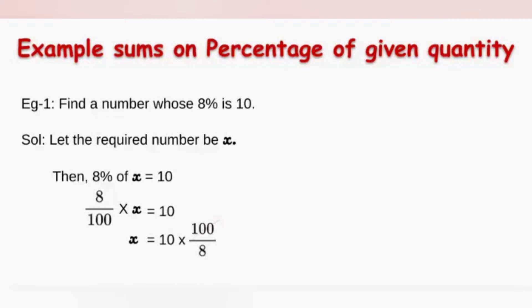Now doing cancellation: 10 and 8 cancel, and 100 and 2 cancel, giving us 5 into 25, which is 125. That means 8 percent of 125 is nothing but 10.